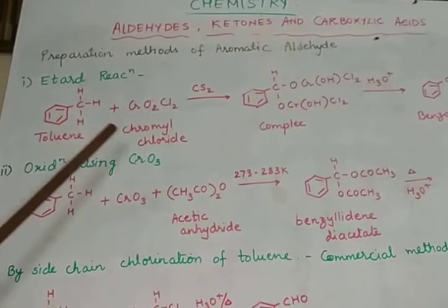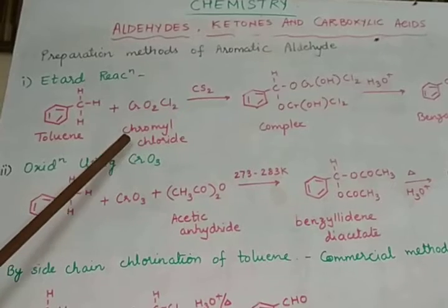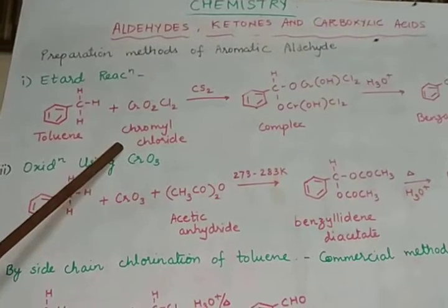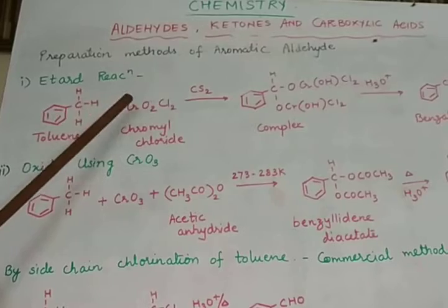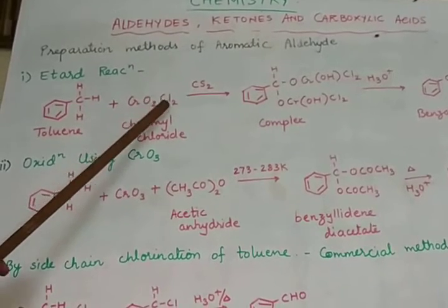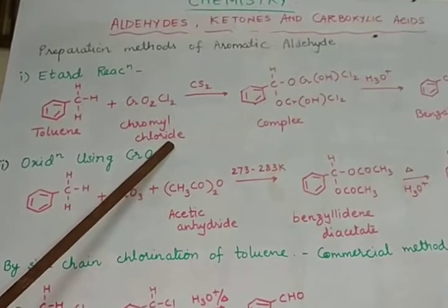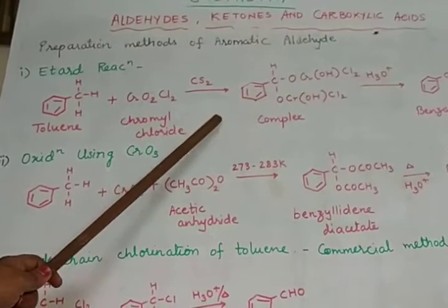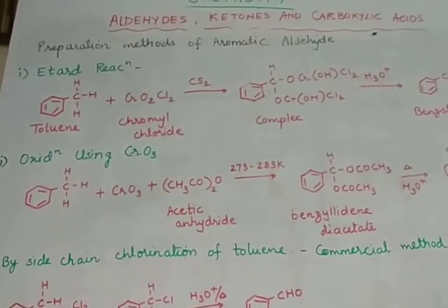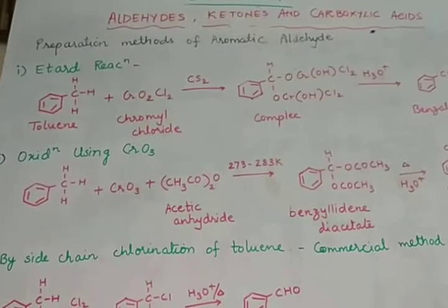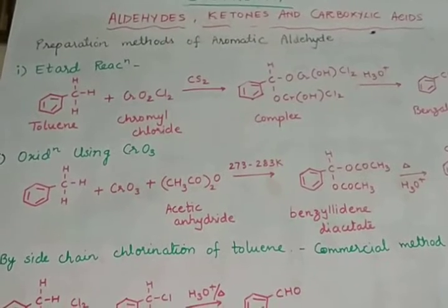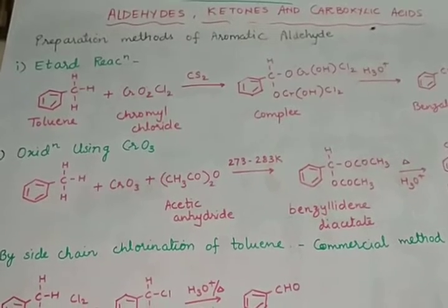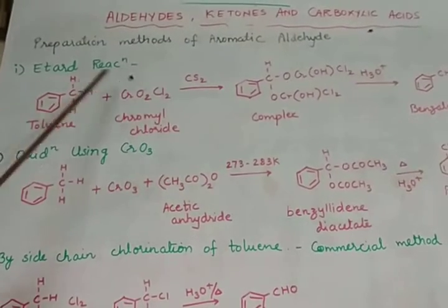Toluene is treated with chromyl chloride — CrO2Cl2 — which is a new type of compound we are seeing in this chapter. In presence of carbon disulfide it forms a complex. It seems to be a substitution reaction, but let's see what happens exactly in the reaction.